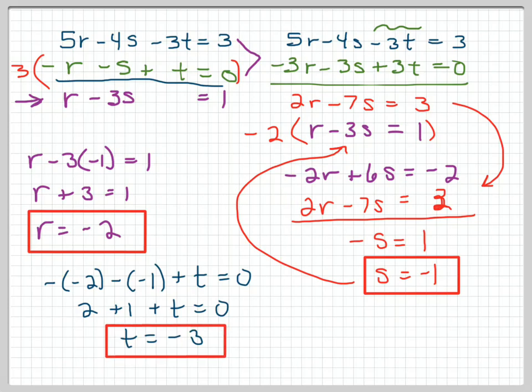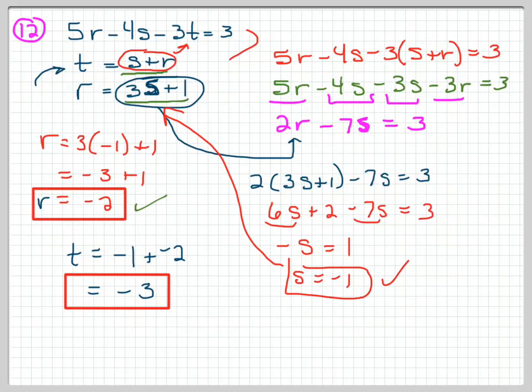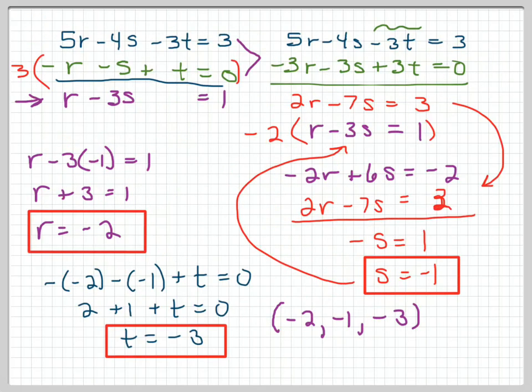My solution is negative 2 for r, negative 1 for s, and negative 3 for t. So either way you do it, you get exactly the same point at which these two planes cross.